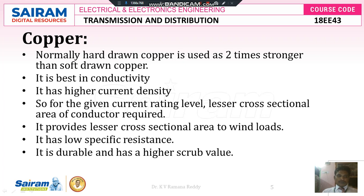First we look at copper. Normally hard drawn copper is used, as it is two times stronger than soft drawn copper. Hard drawn copper is copper that is heated up to around 250 degrees centigrade and suddenly dipped into water, making it hard drawn. Soft drawn copper is heated up to 250 degrees centigrade and then exposed to the atmosphere, where it cools down at ambient temperature. Comparing the two, hard drawn copper is two times stronger than soft drawn copper, with high mechanical strength and best conductivity.